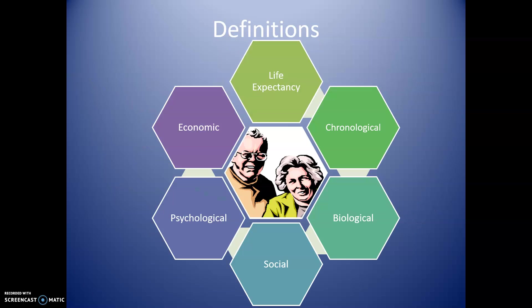So what is old age? It's actually quite difficult to define because different experts have used different definitions depending on their area of focus or expertise. Chronological age is probably the simplest to understand, since it entails putting a number on the age that we think of as old age.